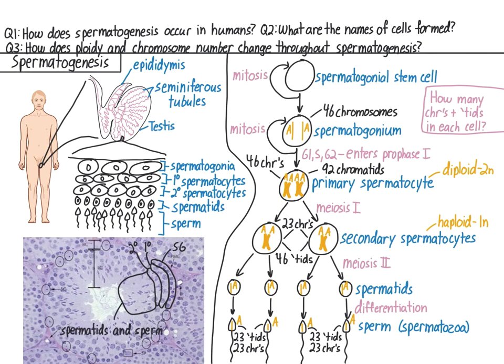Okay, that's it for this video on spermatogenesis. By now, you should understand how spermatogenesis occurs in humans, be able to remember the names of these cells, and understand how chromosome number changes throughout spermatogenesis. Remember to fill out the learning guide, and I'll see you all in the next video on oogenesis and fertilization.